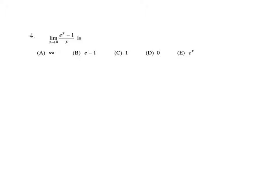For our next problem, we plug in 0 and look at the limit as x approaches 0 of (e to the x minus 1) over x. That generates 0 over 0, so we apply L'Hôpital's rule and take the derivative of the top over the derivative of the bottom. That limit evaluates to e to the 0, which is 1, giving us answer choice C.